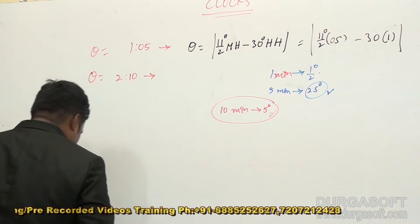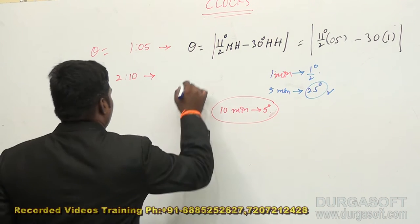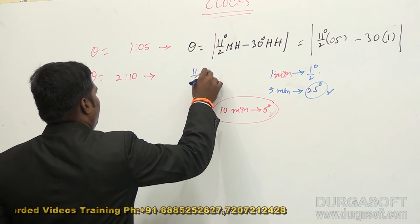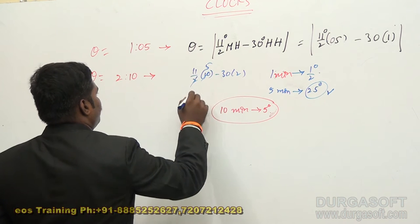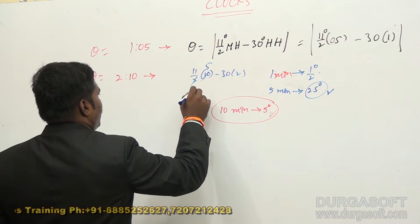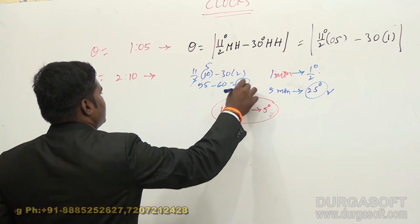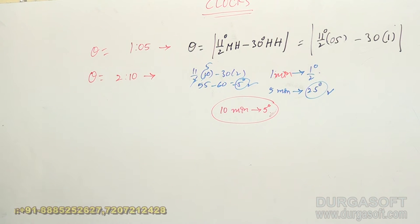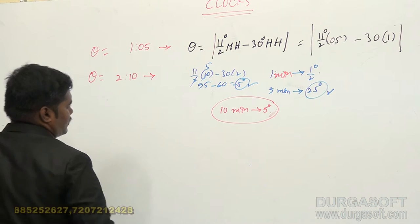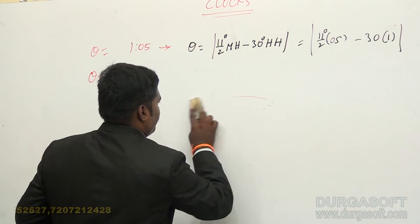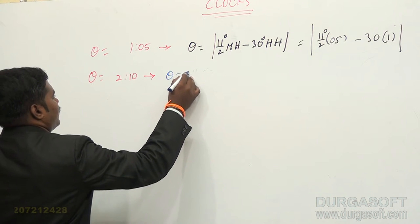What is the angle here? By applying the formula, you can get 11/2 into 10 minus 30 into 2. You can get 2 ones and 2 fives — 5 into 11 gives 55, minus 60, you can get 5 degrees is the answer. By applying the formula also you can get the answer. Here the theta is equal to 5 degrees.